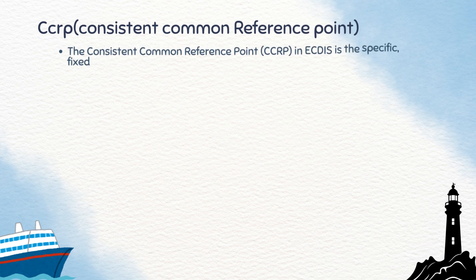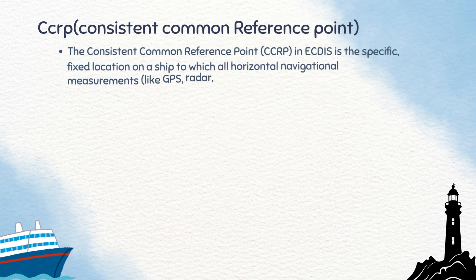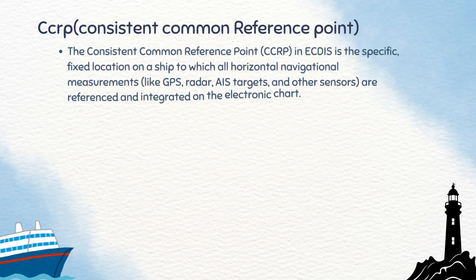CCRP, or Consistent Common Reference Point, is a fixed location on the ship to which all navigational sensors are aligned. This ensures that all data matches correctly on the ECDIS display.